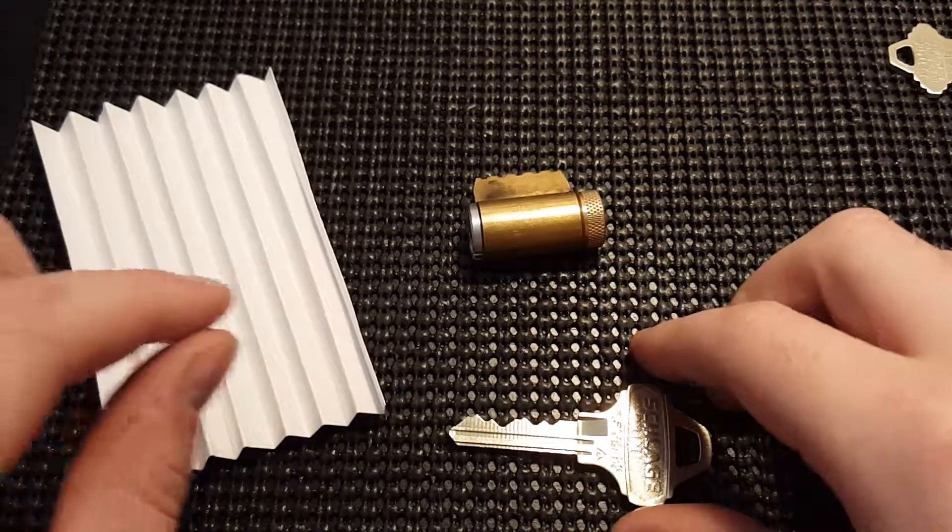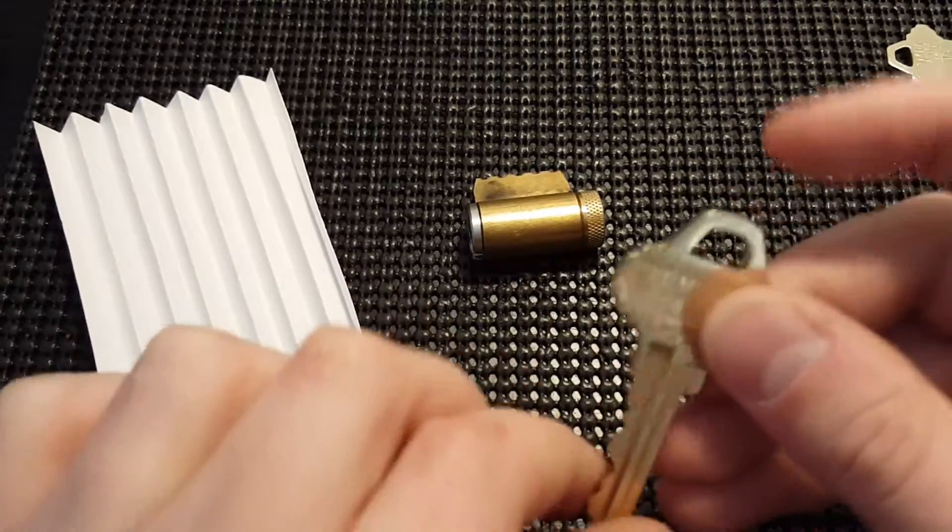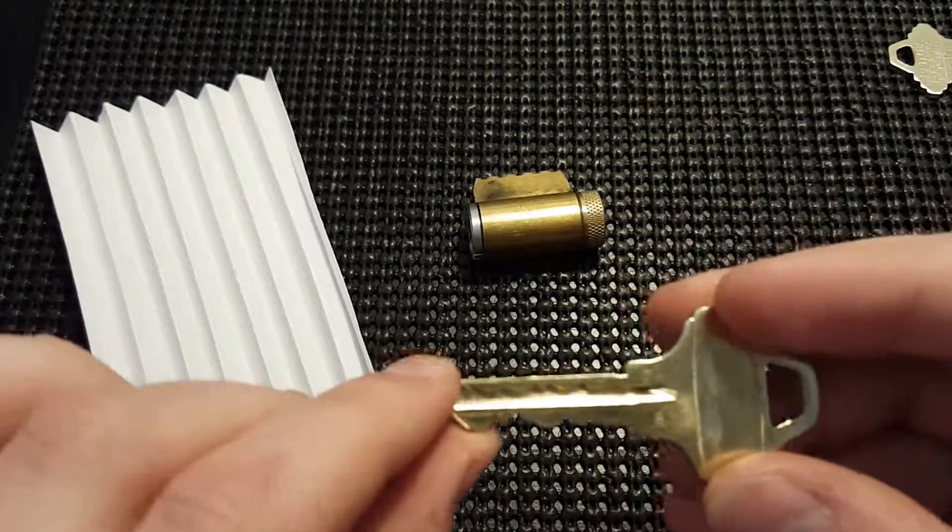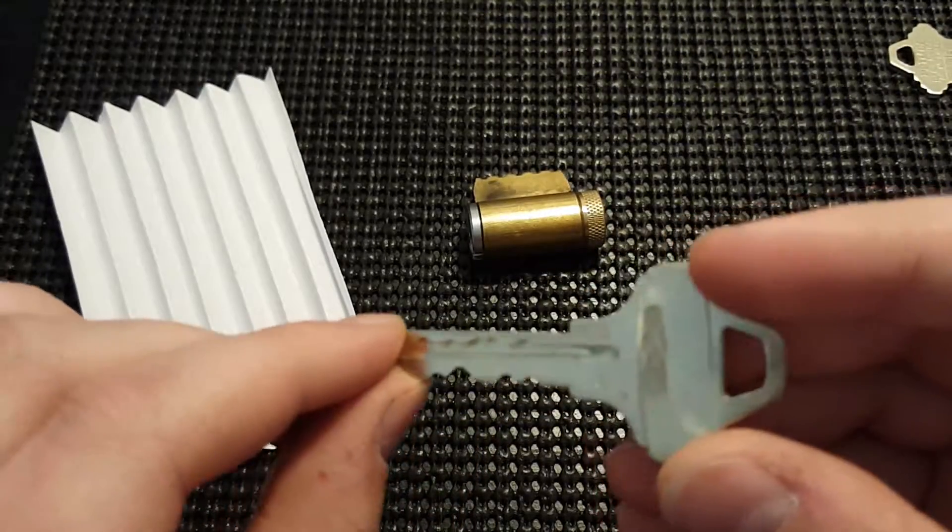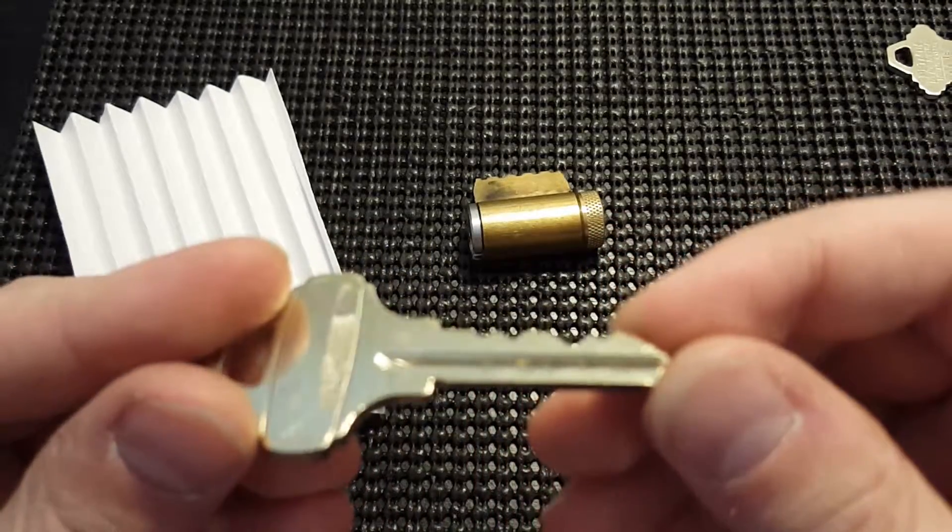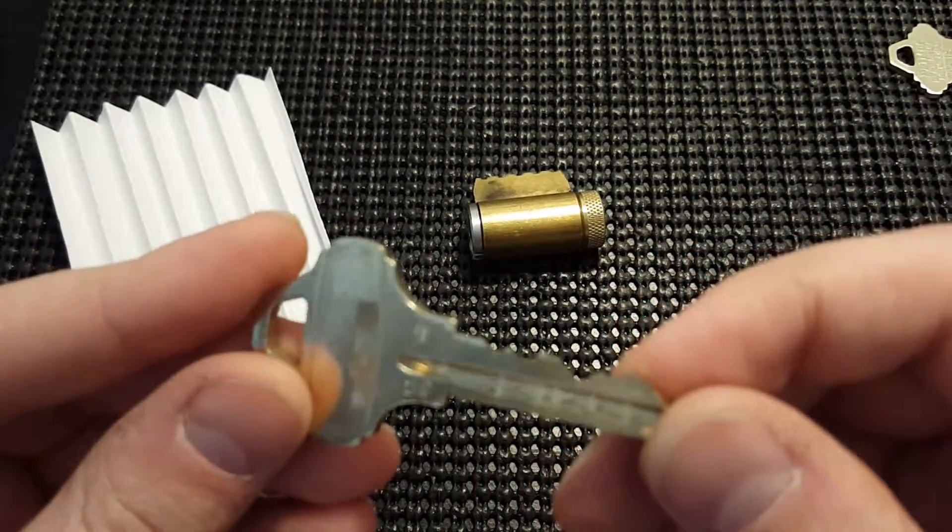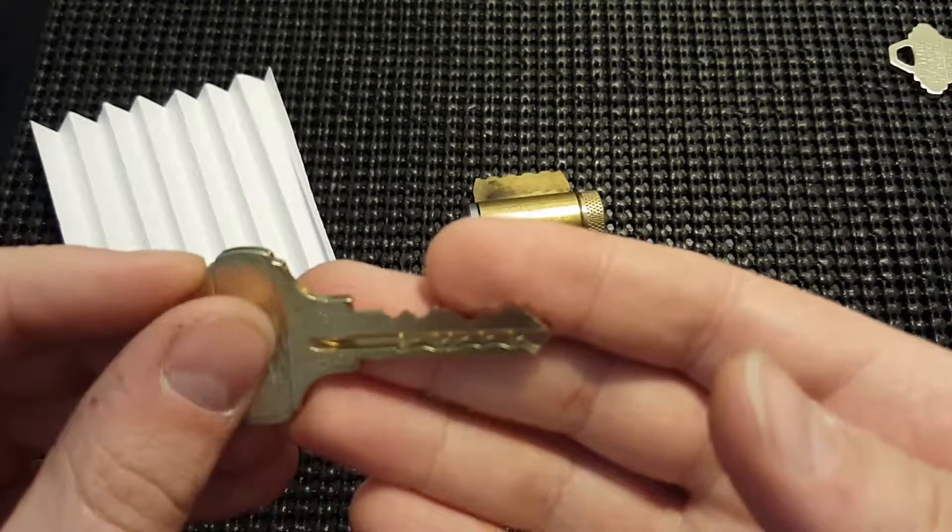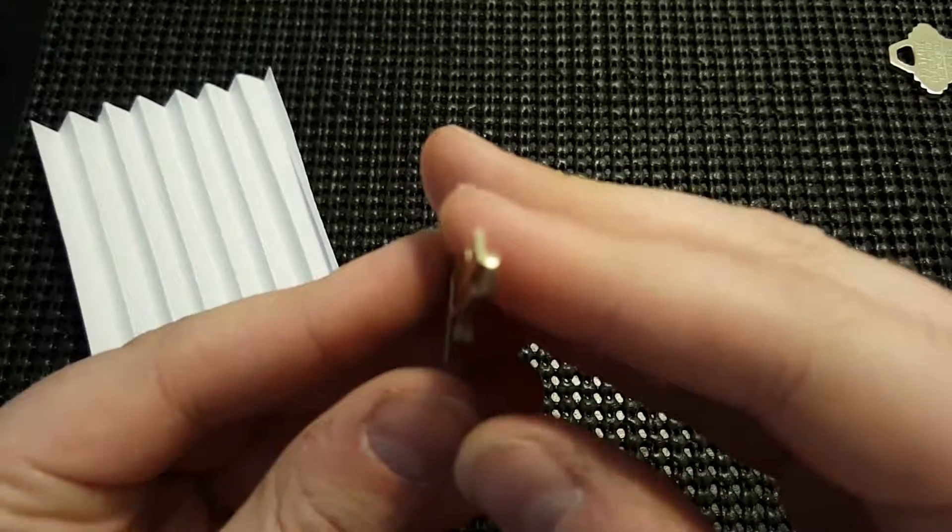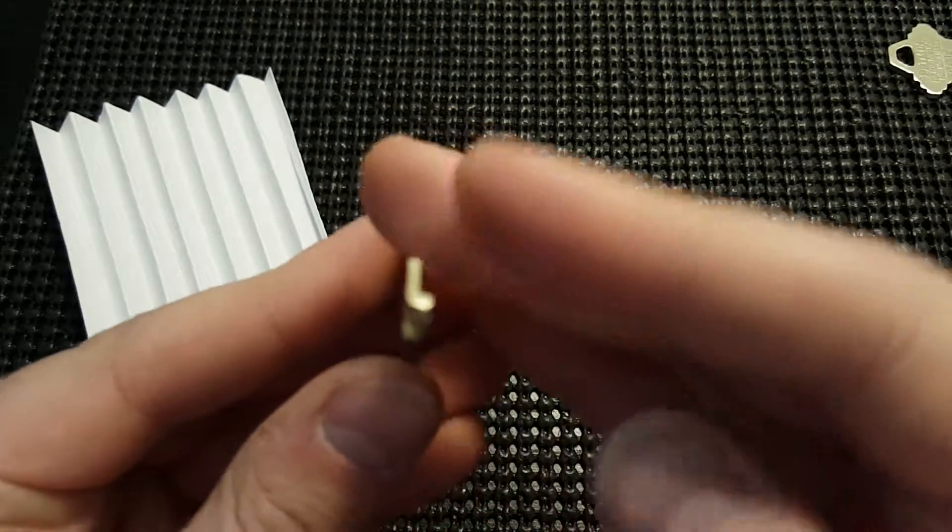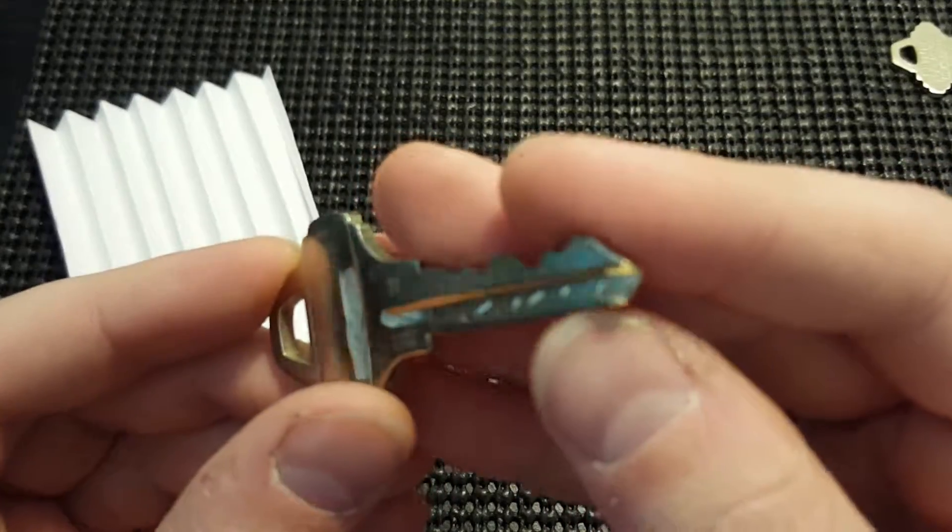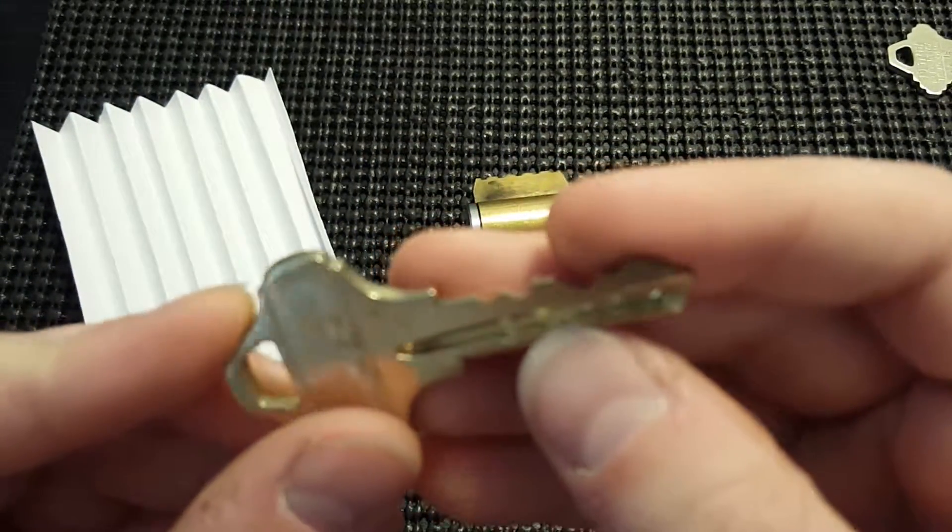Alright, in this video I'm going to take apart my Schlage Everest Primus to see how it works. I've taken apart my regular Primus and I'm thinking it's probably the same exact way, except this guy has the C123 key with a little notch on the side of it like a regular Everest key, except it is cut up.